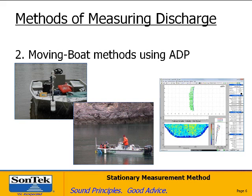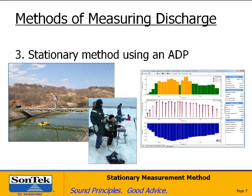The fourth method of using an ADP to measure discharge is the stationary method. On the left part of the screen, you see a stream gauger standing on a walkway, holding the River Cat at a fixed position, collecting data for 40 to 60 seconds at several locations — up to 20 — across the canal, measuring depth and velocity and calculating discharge. The center picture shows some hydrologists in the Northwest Territories of Canada deploying the ADP across a river using the stationary method.